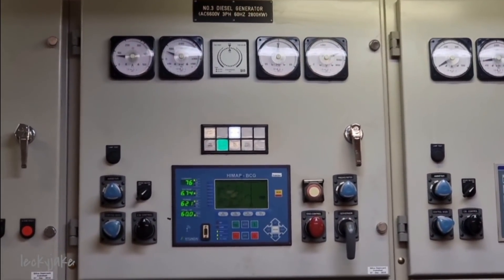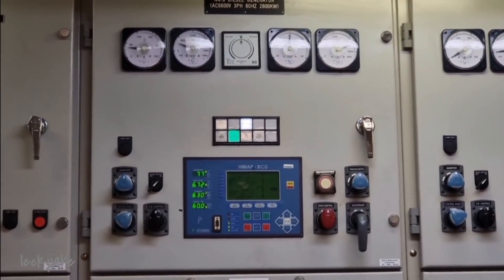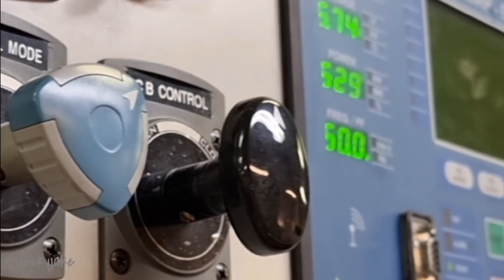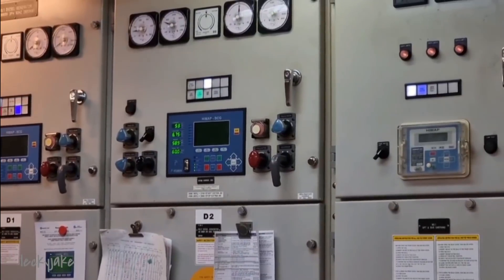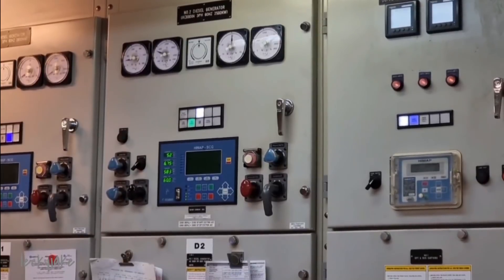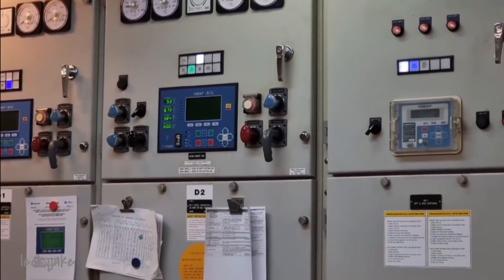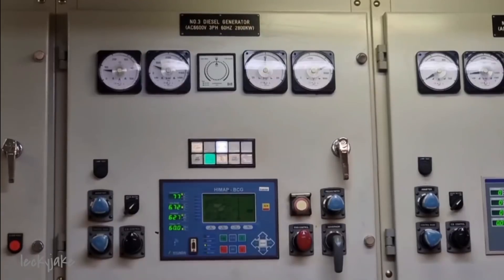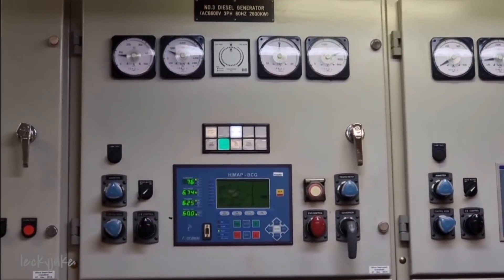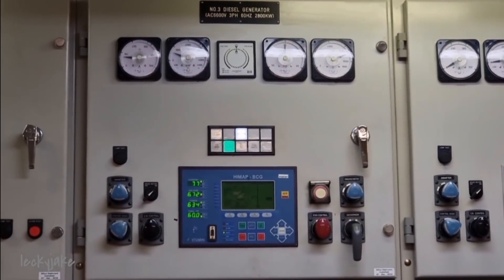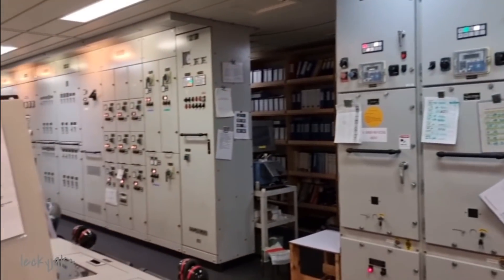The PMS automatically controls the diesel generators for efficient operation. Automatic starting, synchronizing and load sharing is provided for the ship's generator set. The system automatically equalizes the generator frequency with bus bar frequency and energizes the generator's VCB to connect the two circuits at the moment when the phases coincide. Automatic load sharing then ensures that each generator is equally loaded.